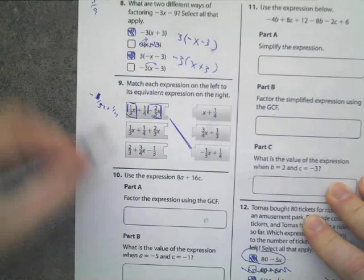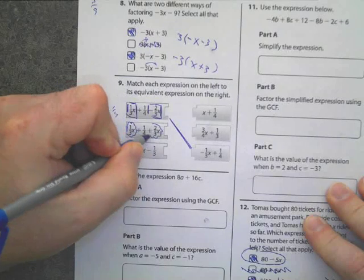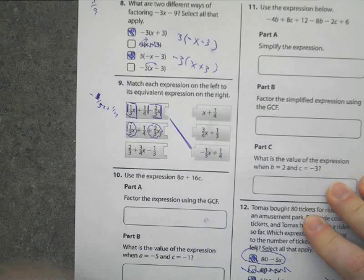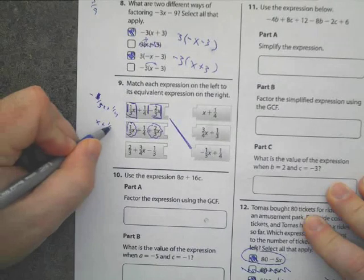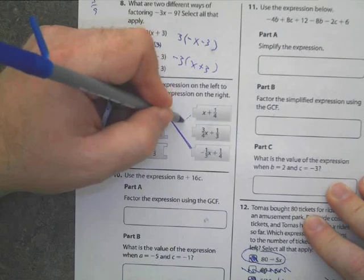Alright, next part, combine a 1/3x and a plus 2/3x. 1/3x plus 2/3x gives me 3/3x, which is x. This is x plus 1/4. I go look at this, I am right here.